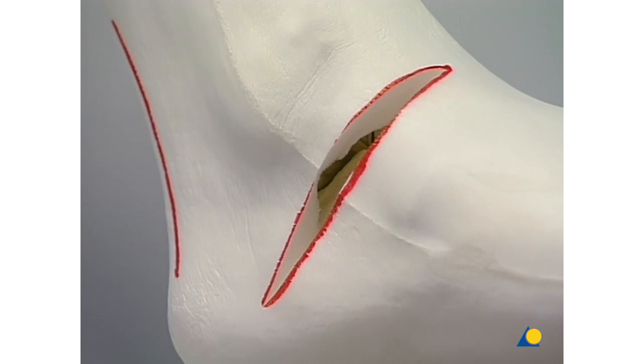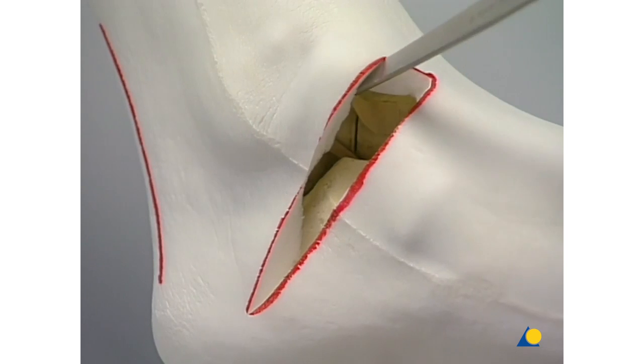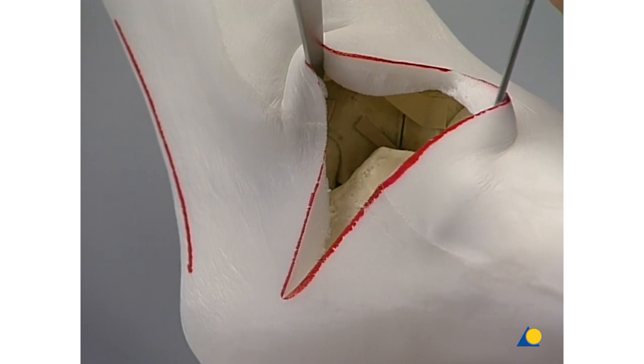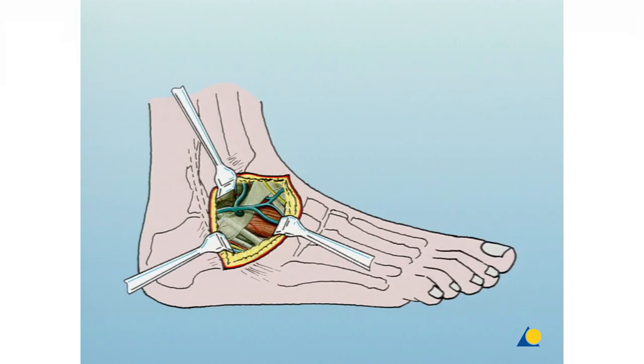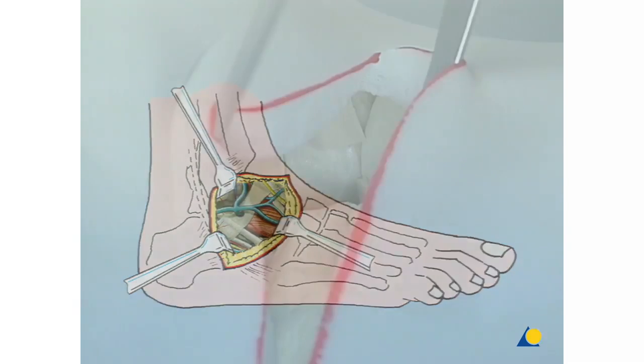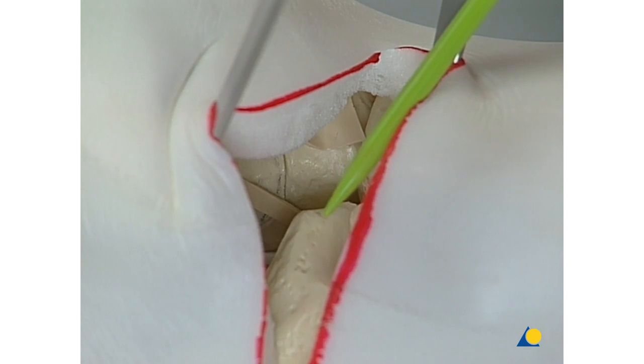A small retractor is placed proximally around the lateral process of the talus. The graphic demonstrates the local anatomy. The neck of the talus and the anterior process of the calcaneus are demonstrated.